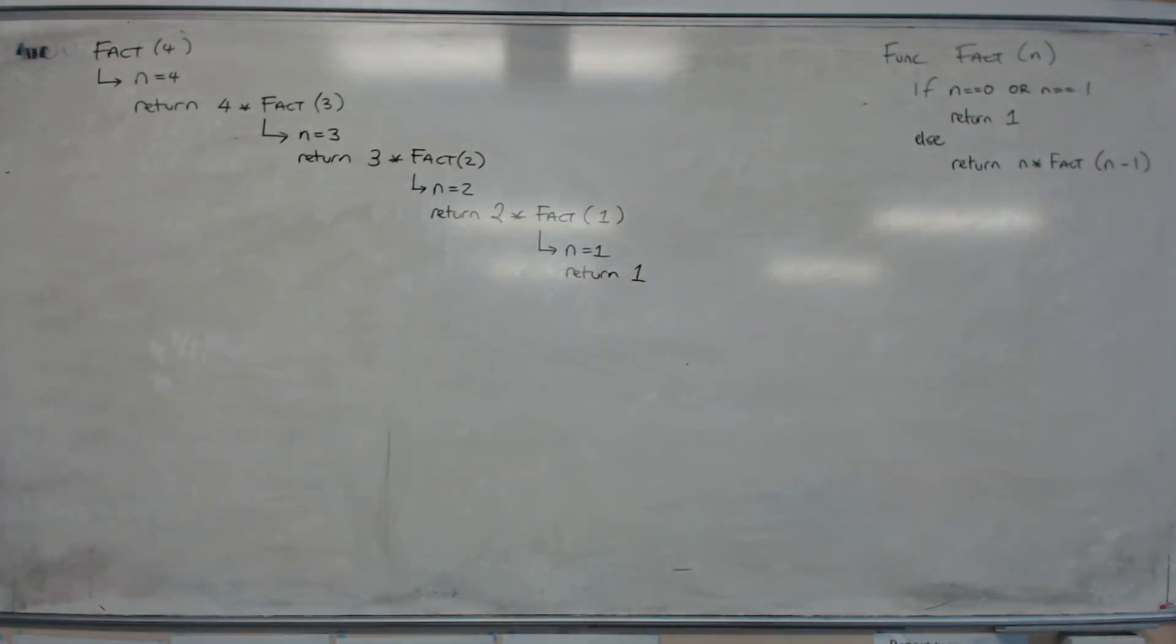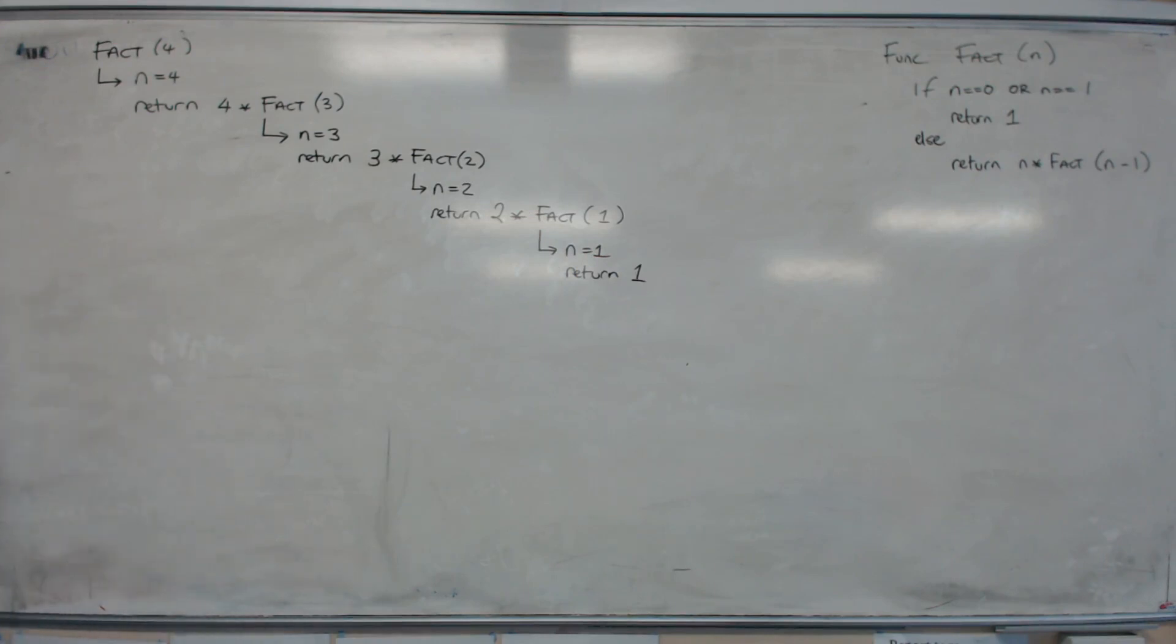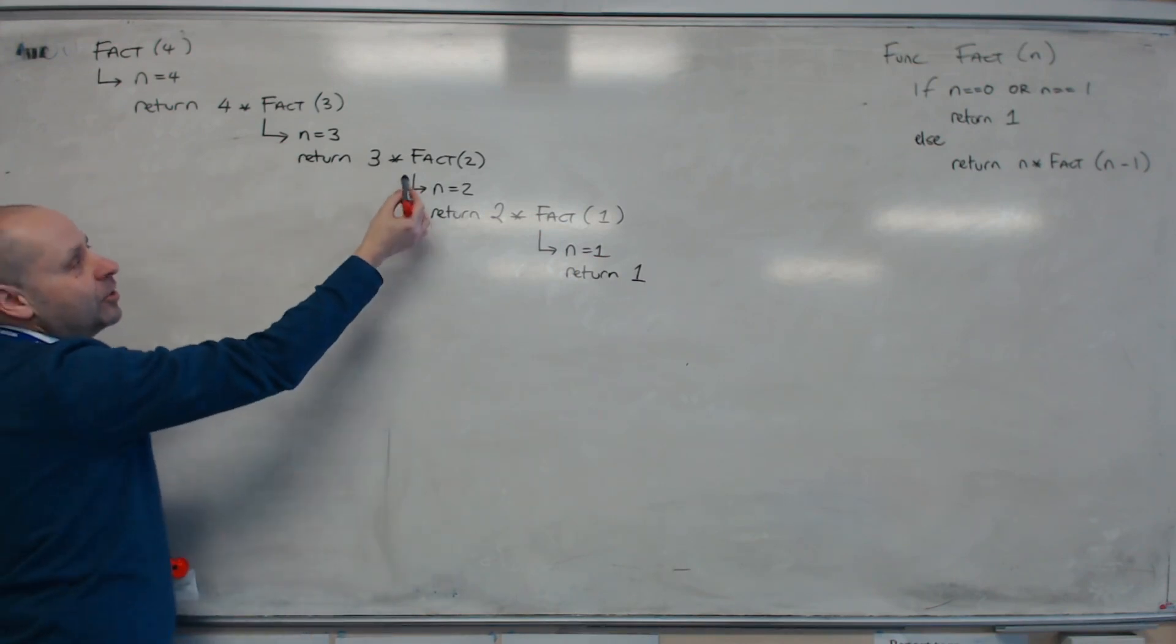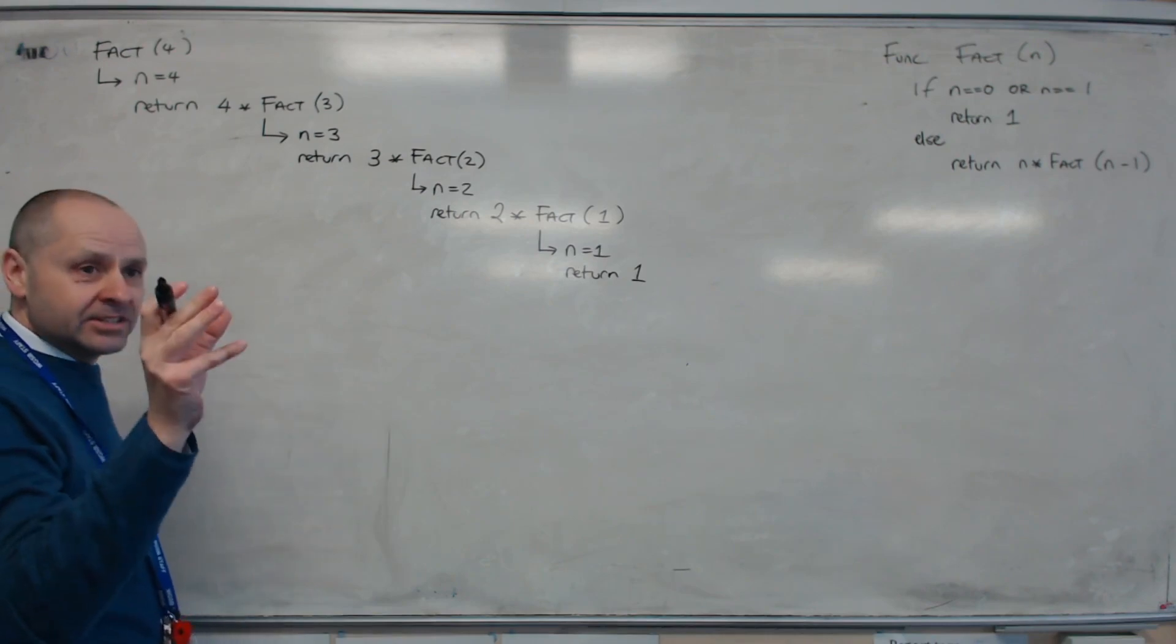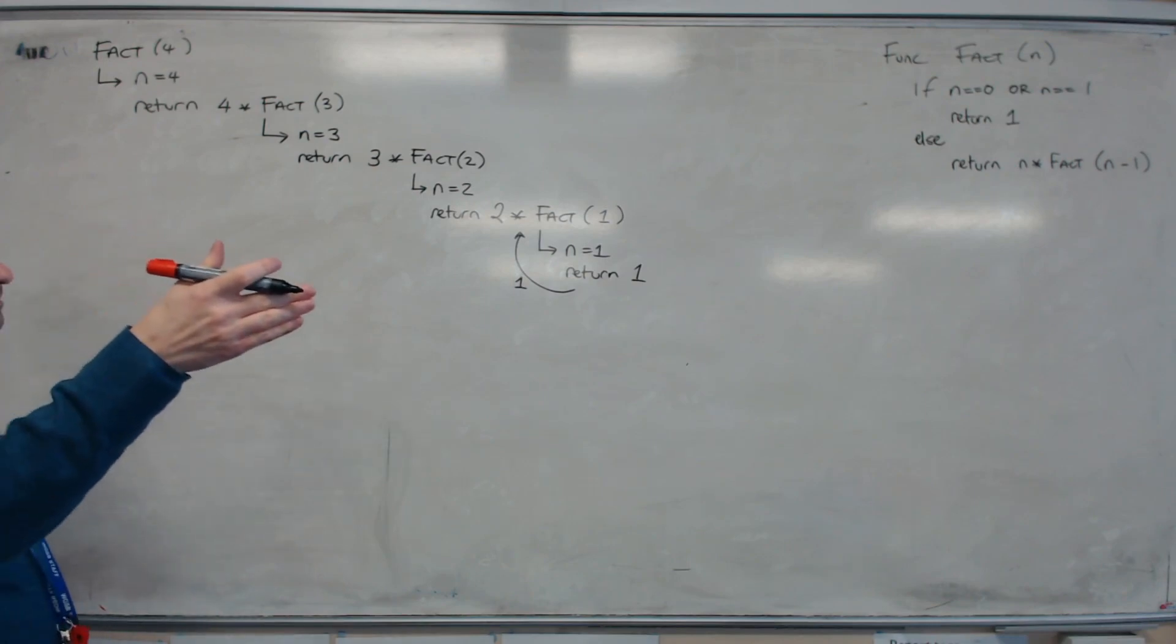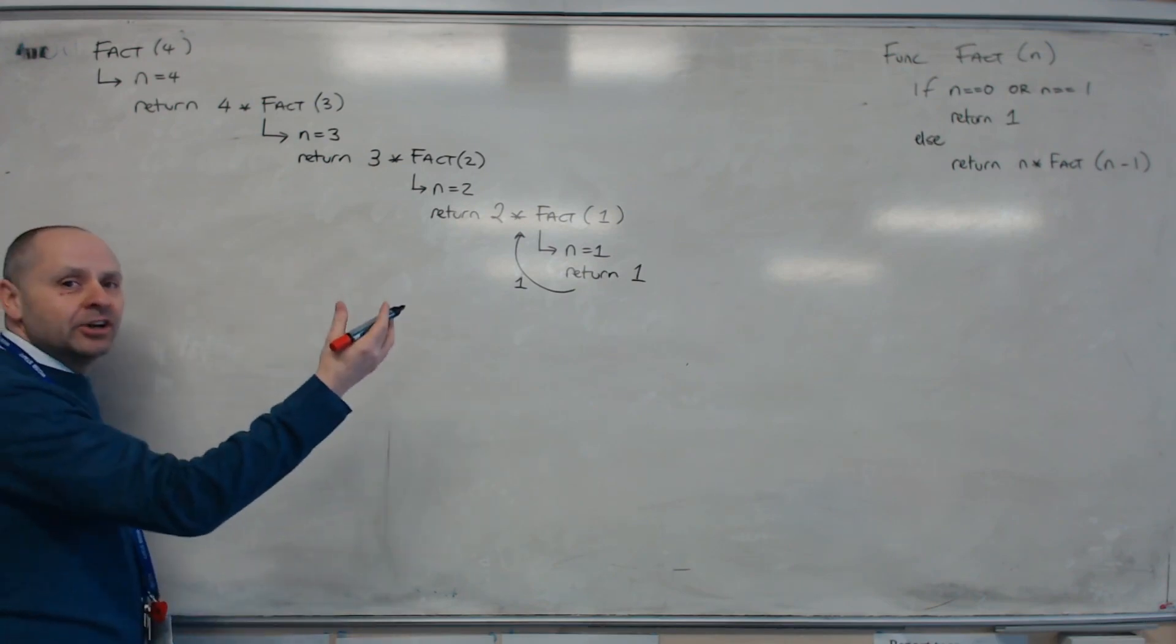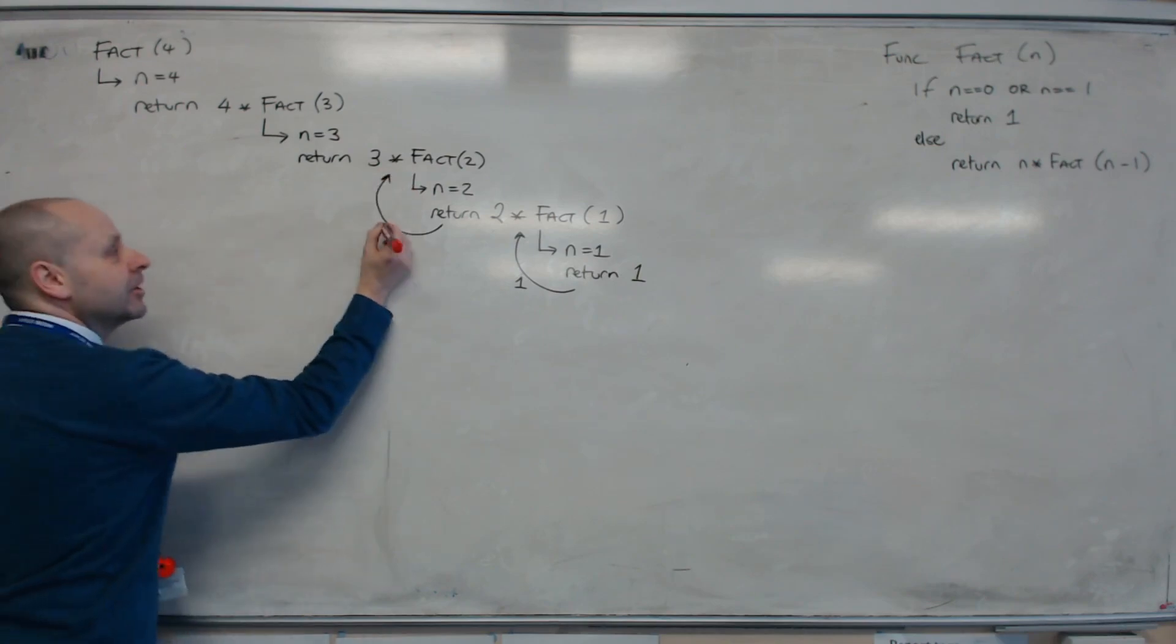We're now going to pass back the answer for fact 1, which means we can evaluate that expression and return. So what we're going to end up doing now is cascade back. Every time we return a value, we have got the piece of the puzzle we were waiting for so that we can evaluate an expression. So I'm going to return 1. Watch how I draw it. This is important. So I'm going to do that. I'm passing it back to where it was used. But what I'm going to do, I'm going to put the value on the little arrow. So I'm showing it being passed back. Now I can work out that expression. So I've got 2 times 1, which hopefully, you all know, is 2. So I'm going to return 2. So from my return statement, I'm going to write 2.